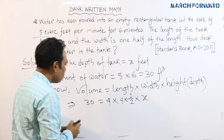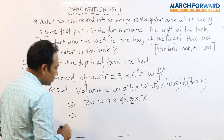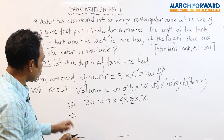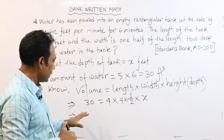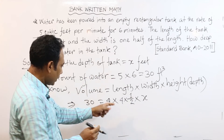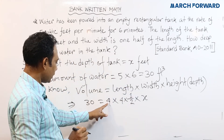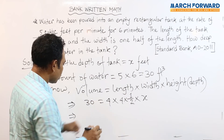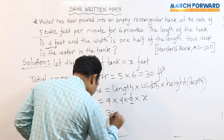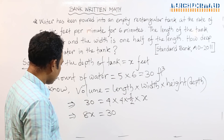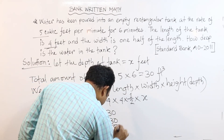We write x here for the depth. The calculation gives us 4 times 2 times x equals 30, so 8x equals 30. Therefore x equals 30 divided by 8.